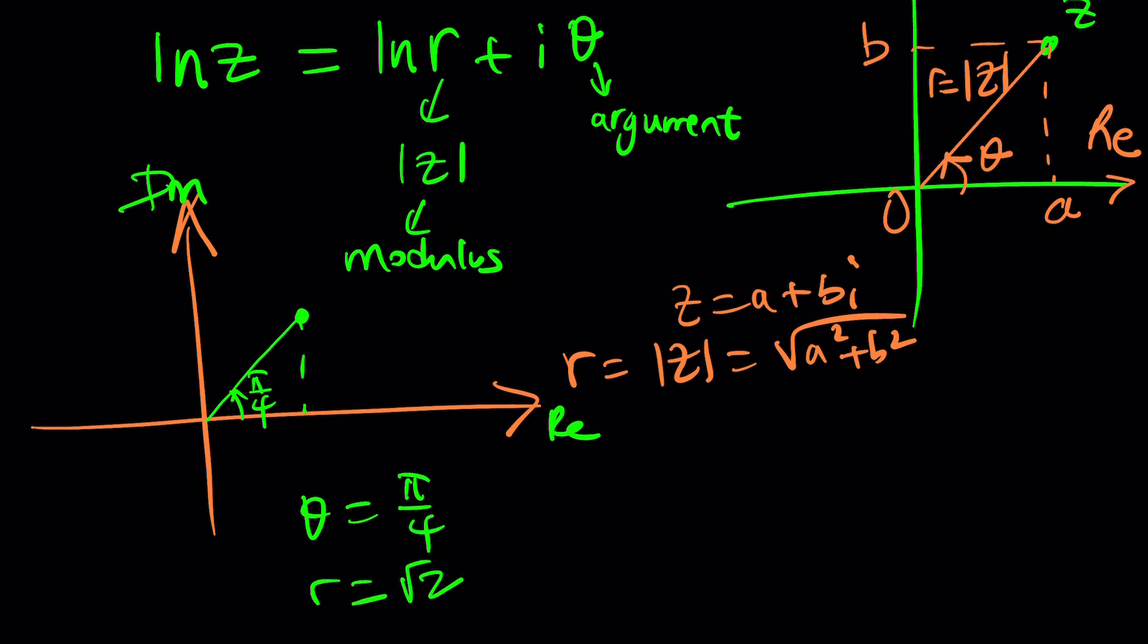So we got theta is pi over 4 and r is root 2 from the Pythagorean theorem. How did I know that so quick? Because this is 1 and this is 1. So the hypotenuse is supposed to be root 2. Make sense? Great. That's the right triangle.